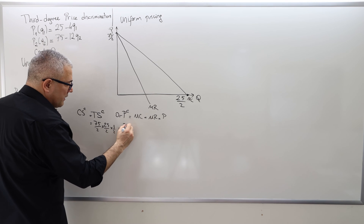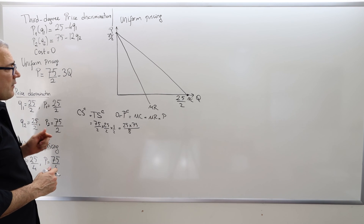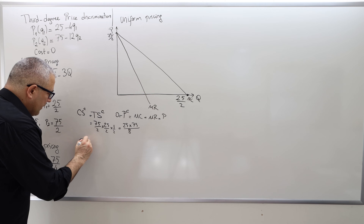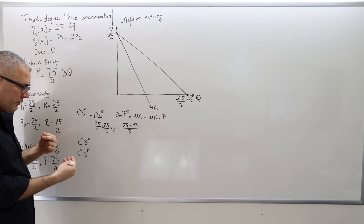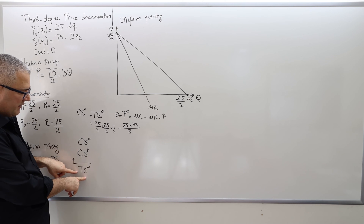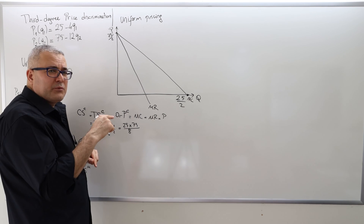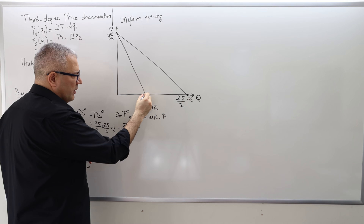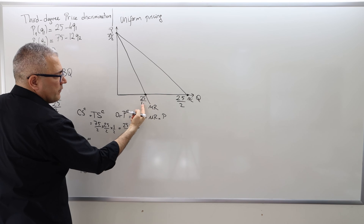I'm not going to calculate this numerically — just leave it as 25 × 75 / 8. What I need to find now is the monopolist's consumer surplus, producer surplus, and total surplus. The deadweight loss equals the competitive total surplus minus the monopolist's total surplus. The monopoly quantity is where marginal revenue hits marginal cost, so that's 25/4. The monopoly price is 75/4.